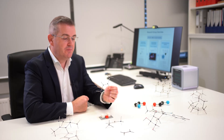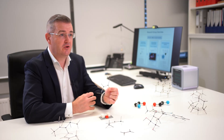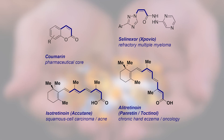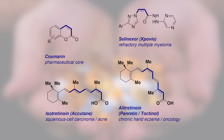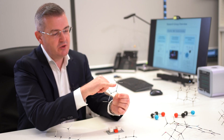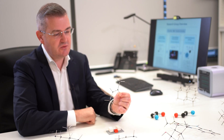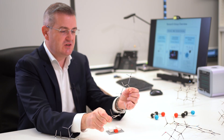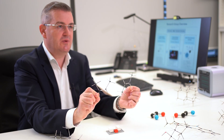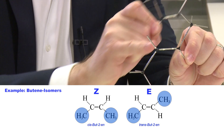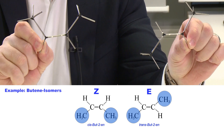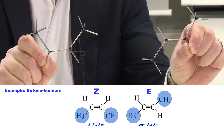Alkenes are small two-carbon units that are the building blocks of a variety of medicines and essential vitamins. This alkene, this C2 carbon unit, has two substituents, and these two substituents can exist in two geometric forms.